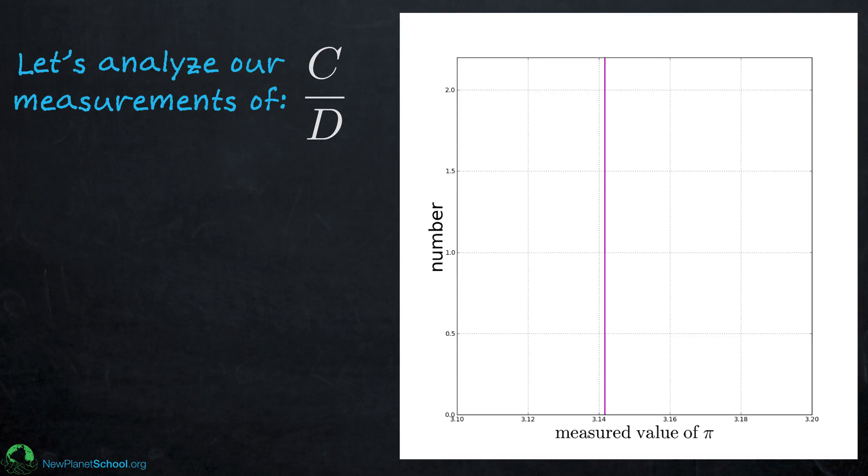So let's analyze the measurements we got. So this is our ratio of the circumference to the diameter. And the first thing I show here on this plot, which is from 3.10 to 3.20. So if our measurements are good, they'll fall somewhere in this range. The first thing I show is the actual value of pi. So that's what this vertical magenta line here is, is the actual value of pi.